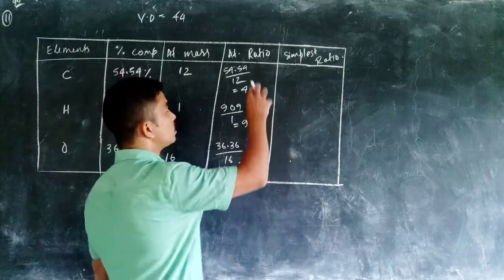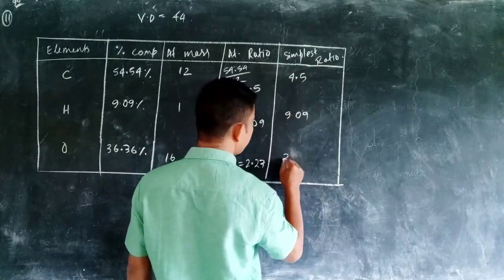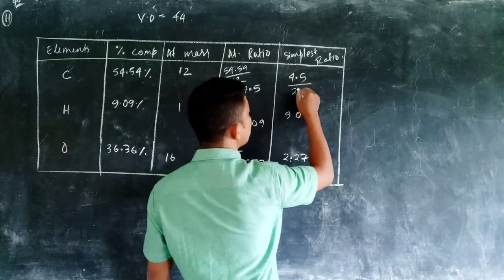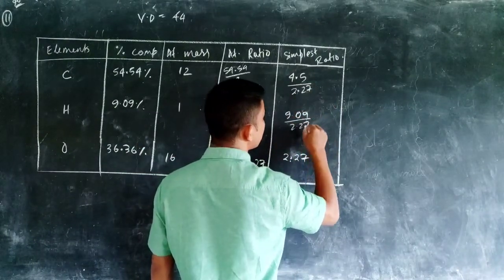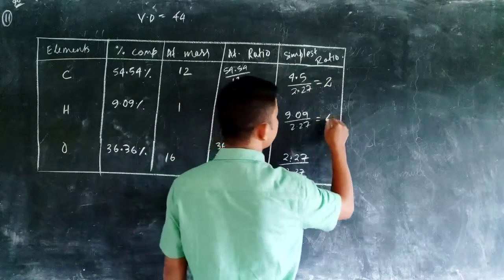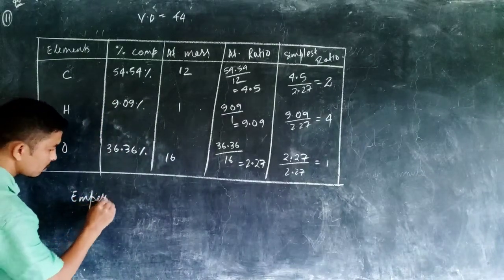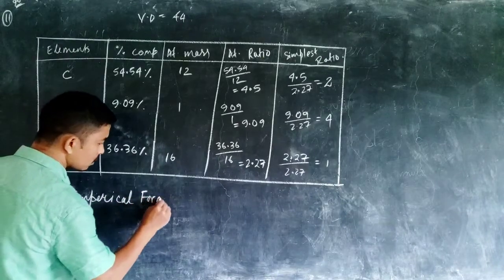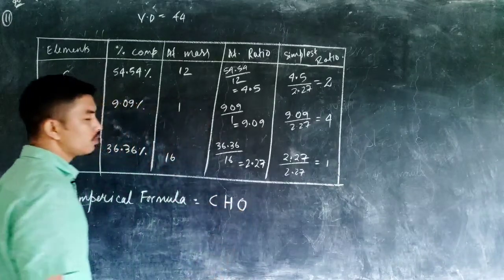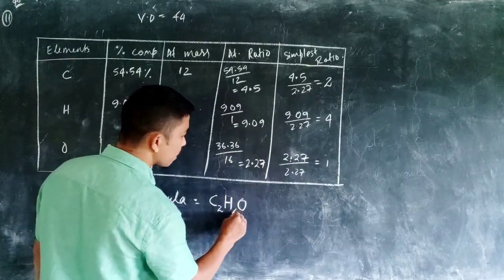To find the simplest ratio, write the atomic ratios: 4.5, 9.09, and 2.27. We identify the smallest number, which is 2.27. Divide each by 2.27: carbon gives approximately 2, hydrogen gives approximately 4, and oxygen gives 1. So the simplest ratio is C:H:O = 2:4:1. The empirical formula is therefore C2H4O.